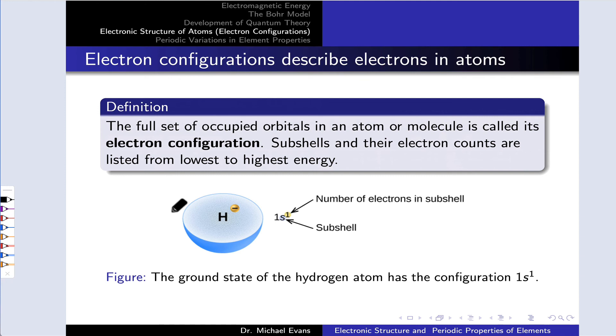And the full description of occupied subshells and the number of electrons within them in an atom is called its electron configuration. The configuration of electrons in the rooms of the building, if you like to continue that metaphor. And to describe an electron configuration, we list those subshells and their numbers of electrons from lowest to highest energy.